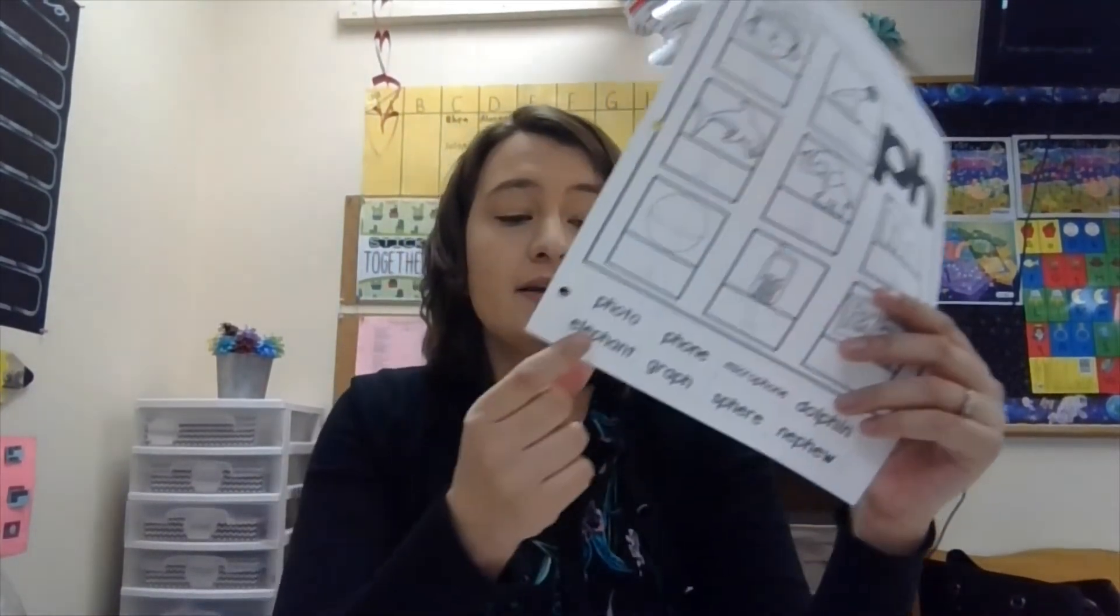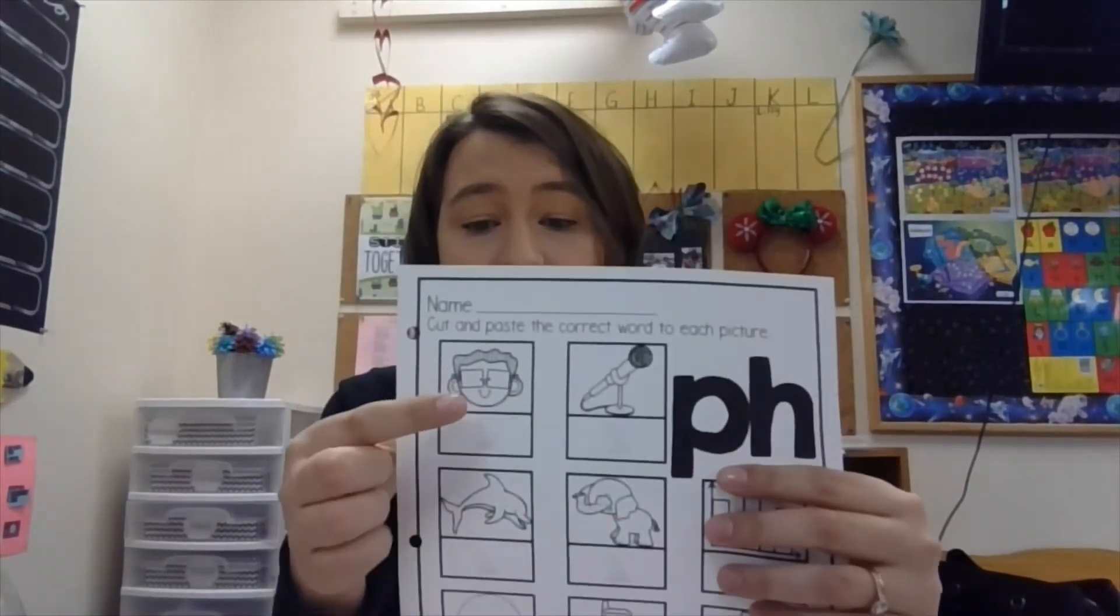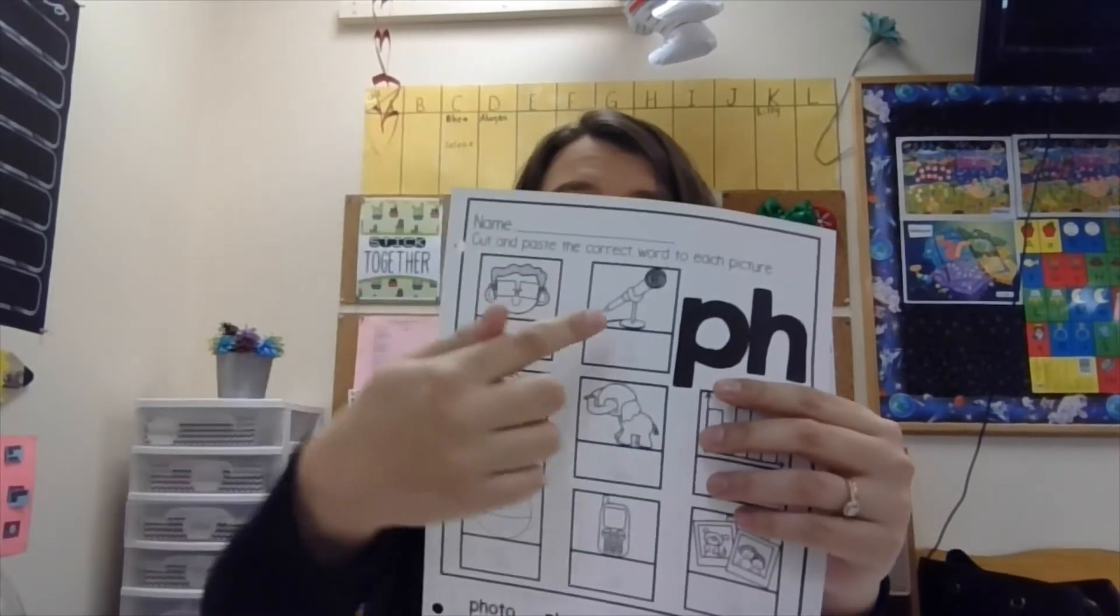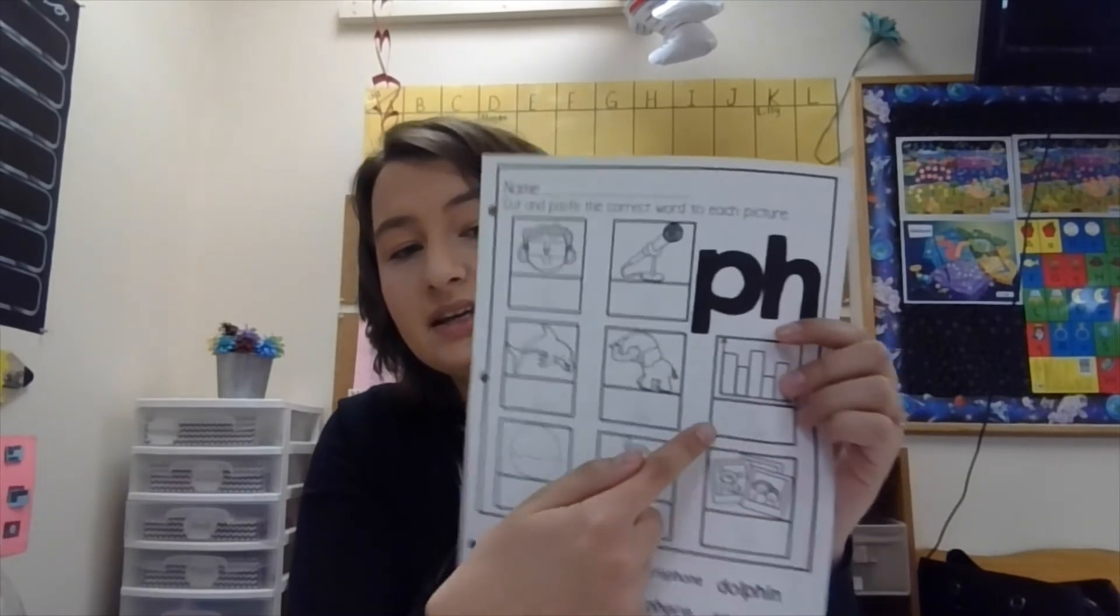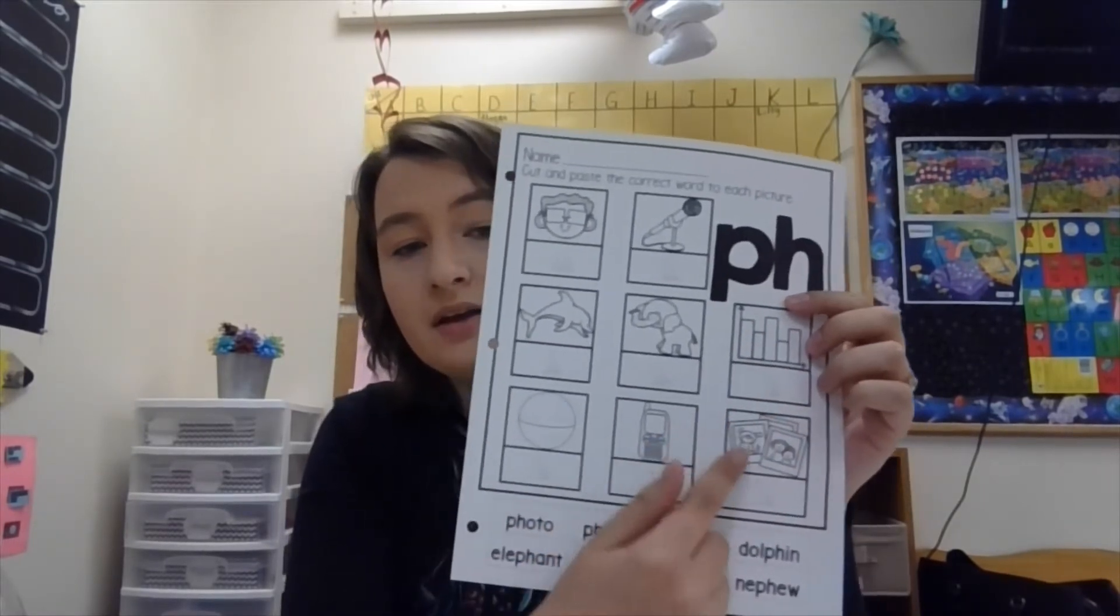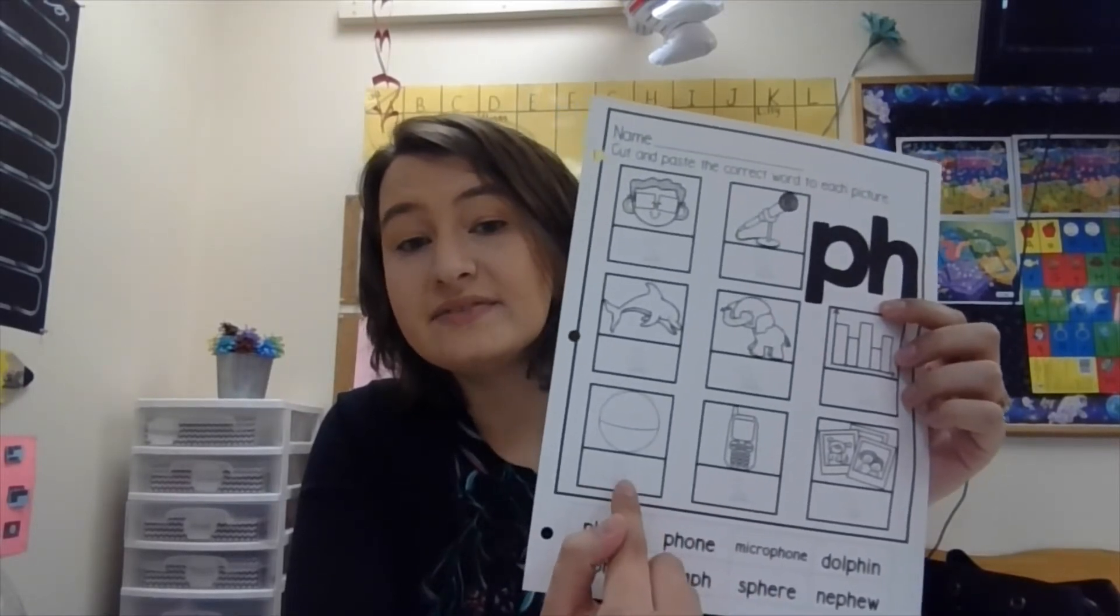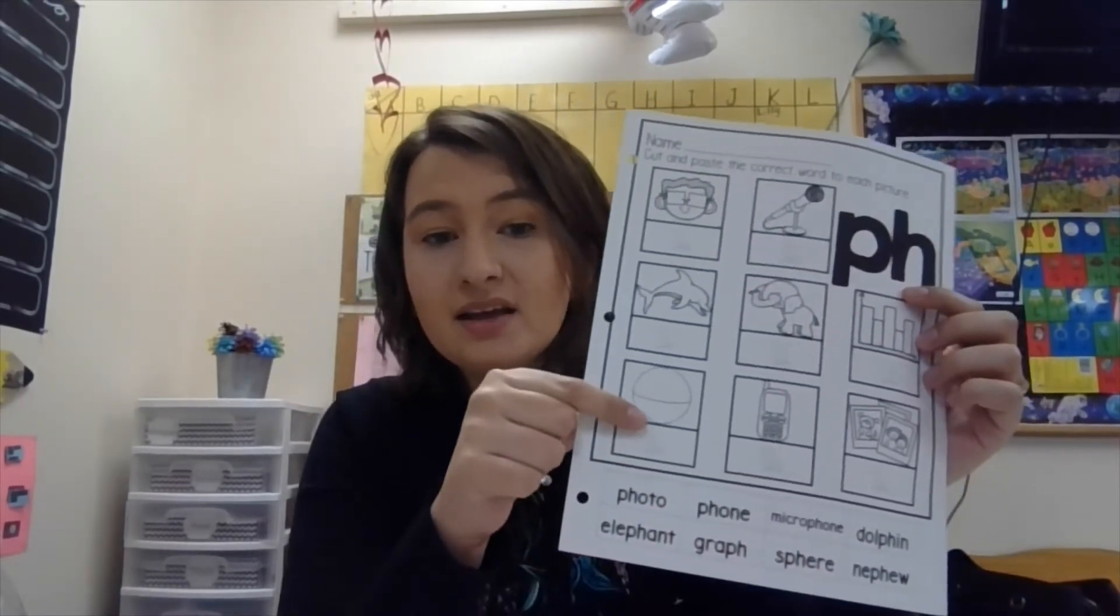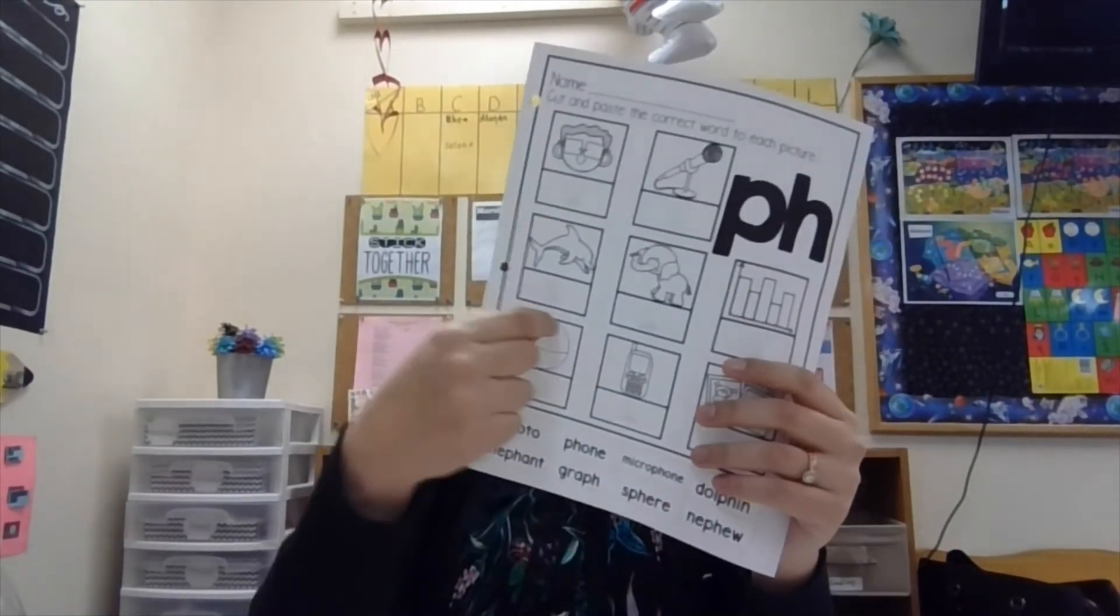Ready? So I want you to glue the correct PH word under each of these pictures. So first we have nephew, microphone, dolphin, elephant, graph, photo, telephone, sphere. So sound these words out. Make sure that you have them, that you glue them on the right ones. Pause the video. Do that. Come back when you're done.